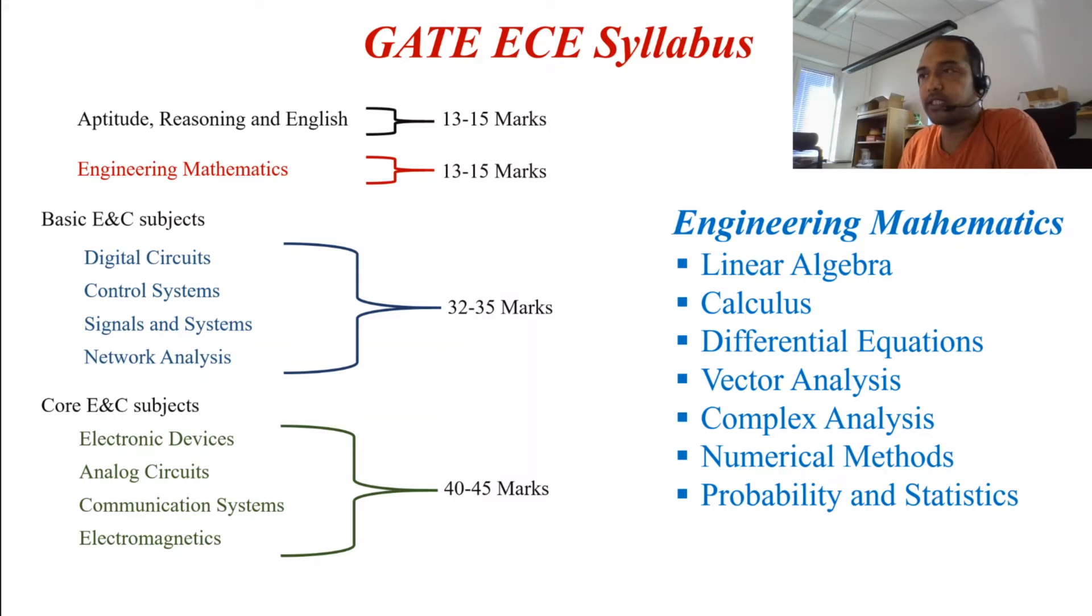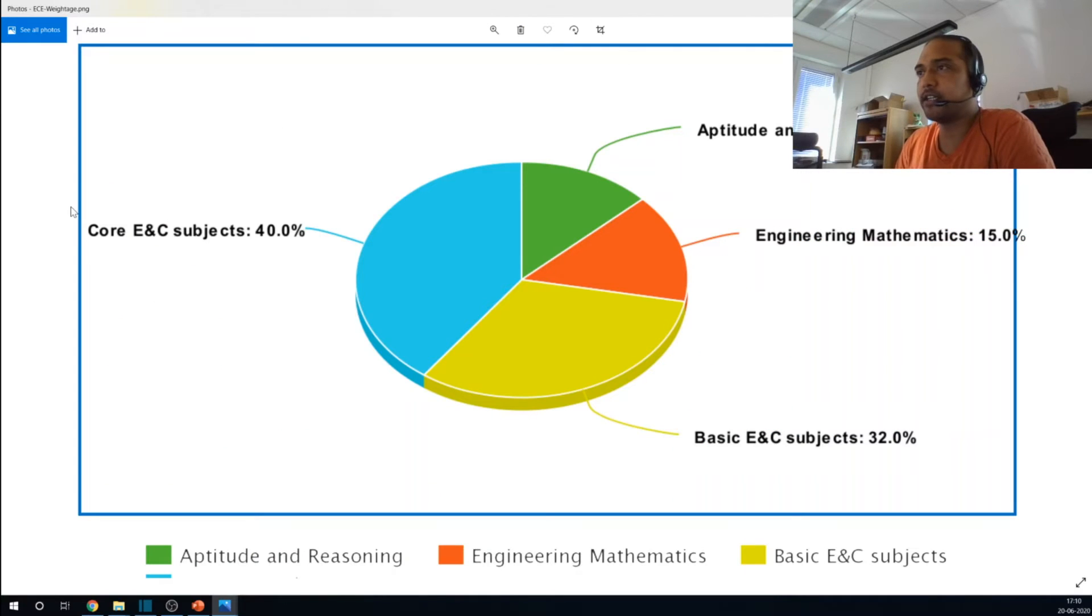Now, let's look at the weightage in percentage of these subjects. In this chart, you can see that the core subjects appear for 40% of the question paper and the basic subjects appear for 32% of the actual question paper. In engineering mathematics, you have 15% worth of marks and the aptitude reasoning is usually around 13%. This percentage can slightly vary from one year to another but in general, they remain the same.